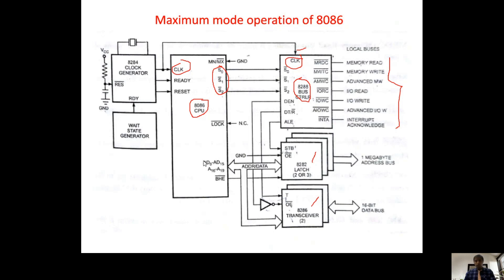Here also we are taking multiplexed address and data lines and making them pure address lines and pure data lines with the help of the ALE signal coming from 8288, and the DT/R bar and DEN signals. With the help of these three signals we activate latches and transceivers accordingly.